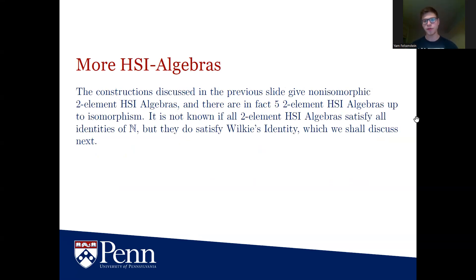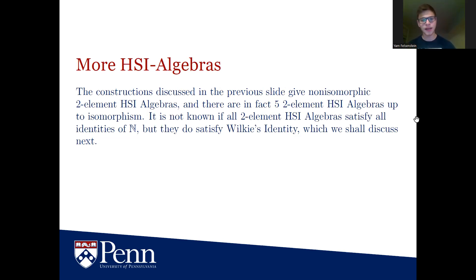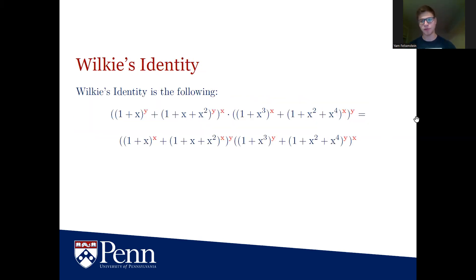The constructions from the previous examples give us non-isomorphic two-element HSI algebras on which the operations are not defined the same way. In fact, there are five such two-element HSI algebras up to isomorphism. It is not known if all two-element HSI algebras satisfy all valid identities of the positive integers, but they do satisfy the counterexample called Wilkie's identity, which we'll now discuss. In Wilkie's identity — highlighted in red — every time we see X in the exponent we replace it by Y and vice versa.